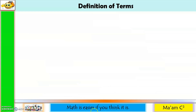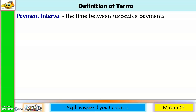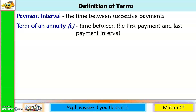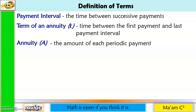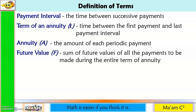Let us define some terms. Payment interval: the time between successive payments. Term of an annuity, small letter T: the time between the first payment and last payment interval. Annuity, capital letter A: the amount of each periodic payment. Future value, capital letter F: the sum of future values of all the payments to be made during the entire term of annuity.